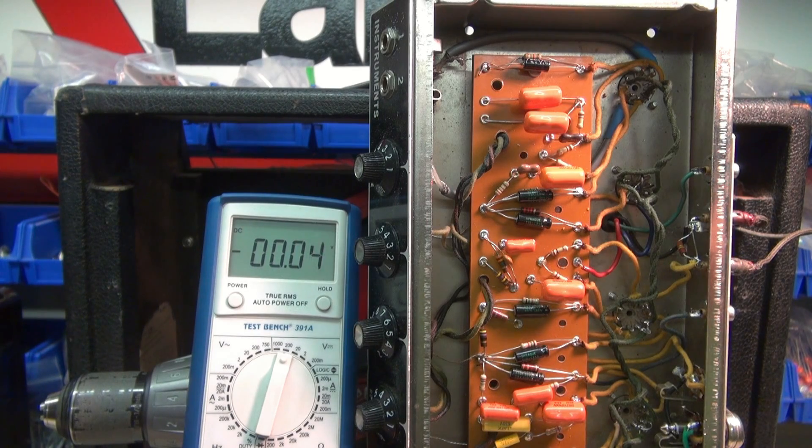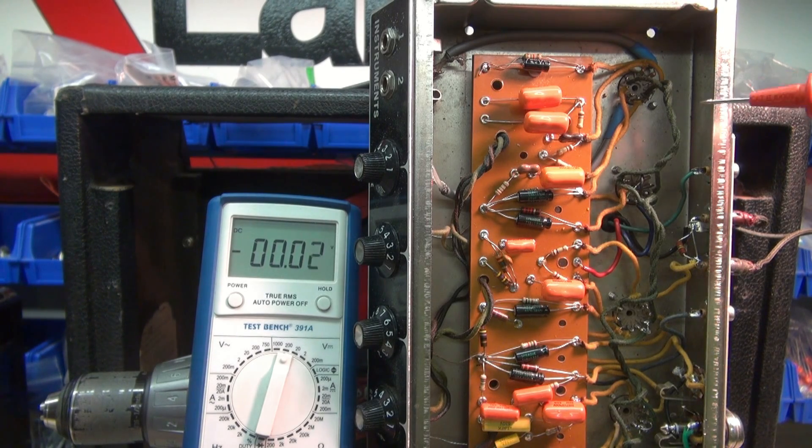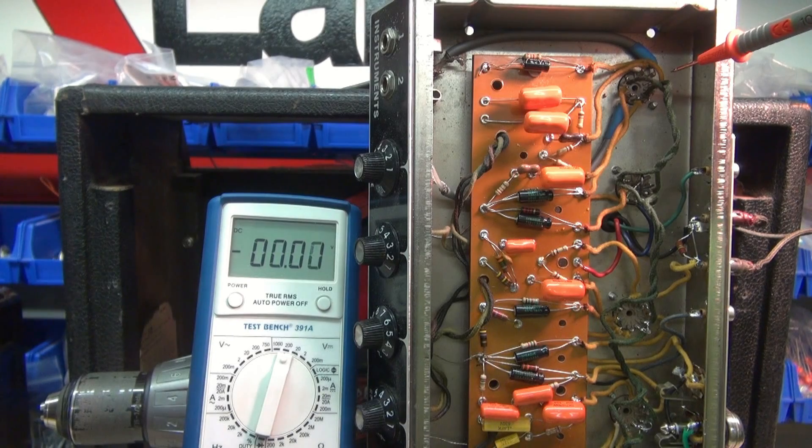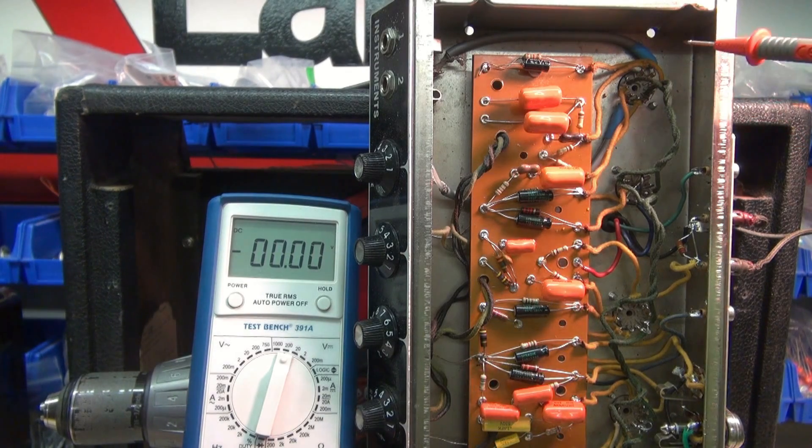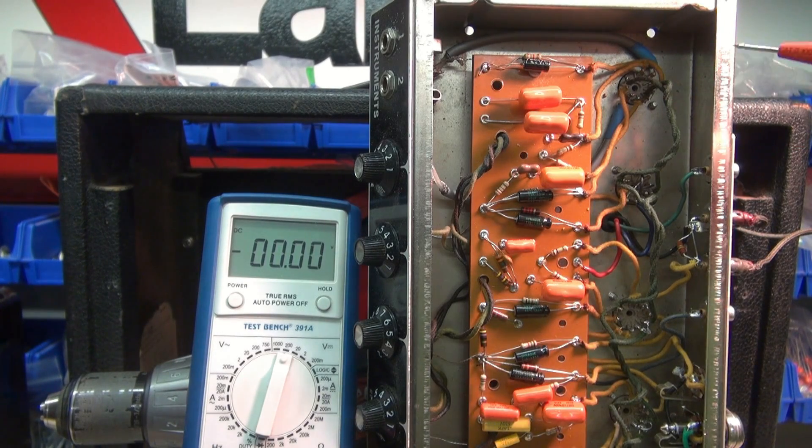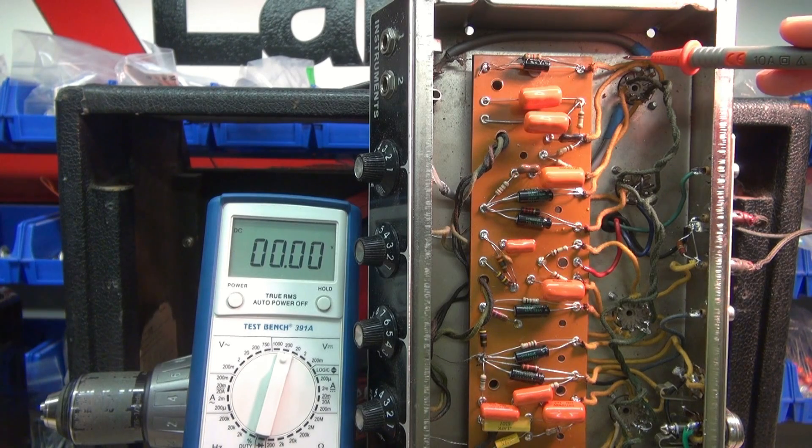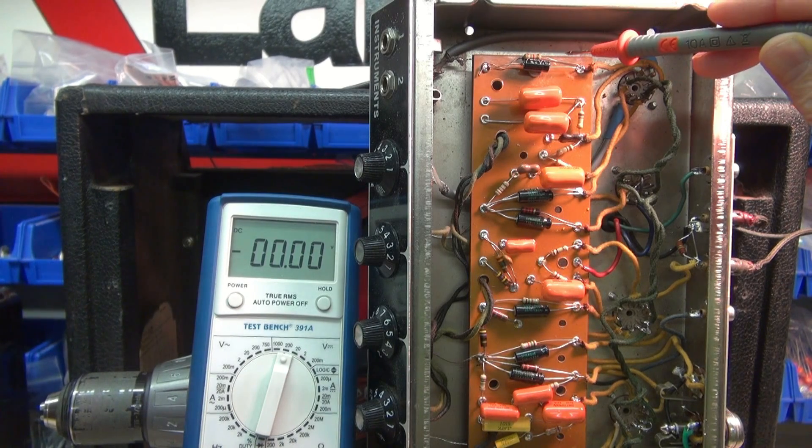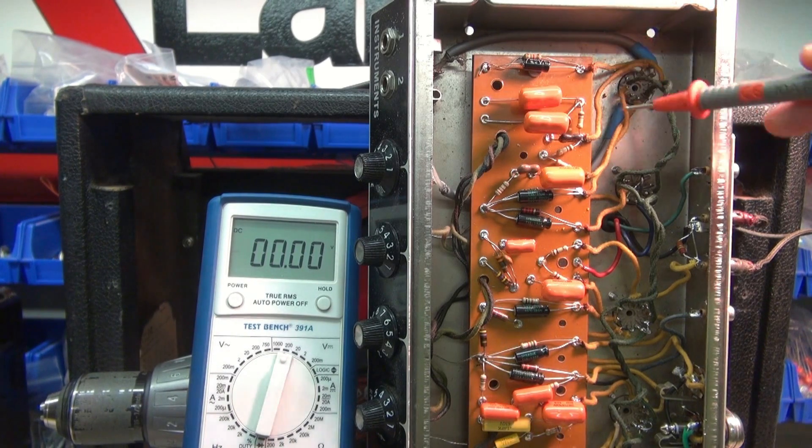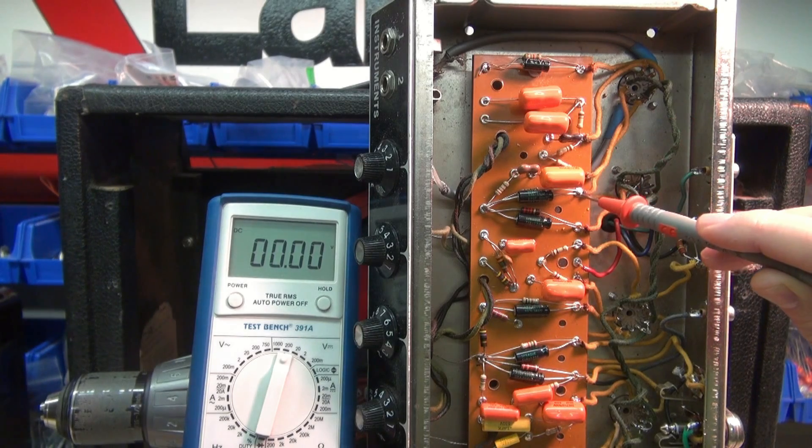So here we are, underside, on a Fender Princeton. This is your 12AX7 tube right here. Let's say you think this tube is bad. Now on the cathode of this tube, there's two elements. You're going to see a 1.5K resistor here with a cap. And hidden over here is the other one.